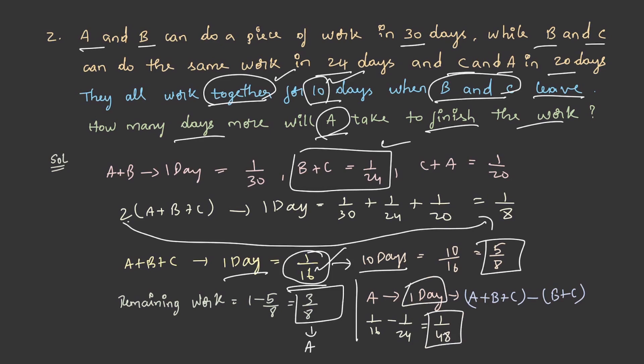Then 3/8 of the work will be completed by A in 48 multiplied by 3/8, that is 18 days. This is the answer. Category 3 in time and work is now complete.